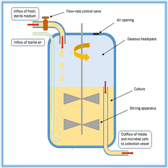However, since the concentration of the limiting nutrient in the chemostat cannot exceed the concentration in the feed, the specific growth rate that the cells can reach in the chemostat is usually slightly lower than the maximal specific growth rate, because specific growth rate usually increases with nutrient concentration as described by the kinetics of the Monod equation.